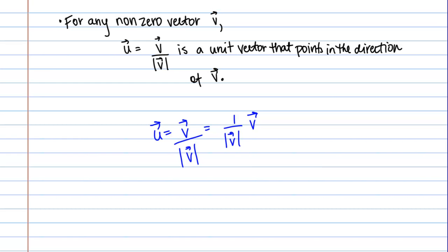This here, 1 over the magnitude of vector v is a number. Because the magnitude of v is a number, 1 over the magnitude of v is also a number. What I'm essentially doing here is scalar multiplication. I'm taking the vector v and multiplying it by the number 1 over the magnitude of vector v.